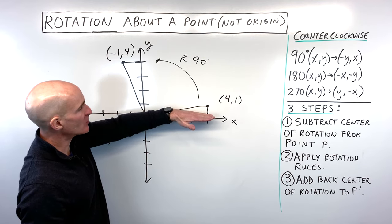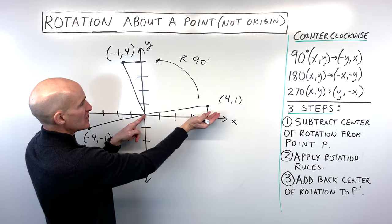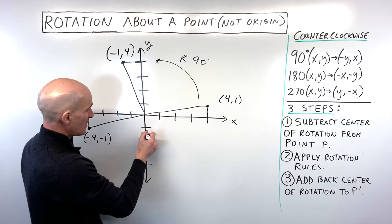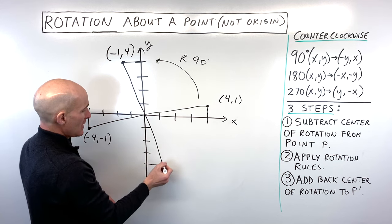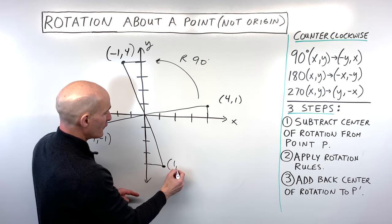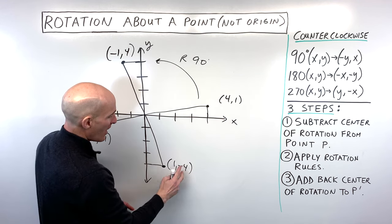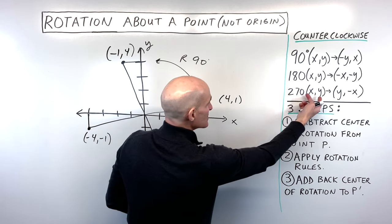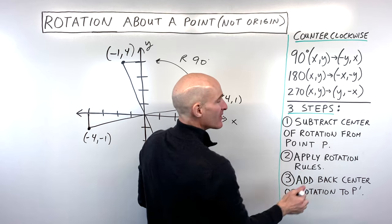For 270 degrees — a three-quarter turn — holding your finger at the origin and turning the paper 90, 180, then three-quarters puts the point right here at (1, -4). From our original (4, 1), we switch x and y, but it's the new y that becomes the opposite. So (x, y) → (y, -x).